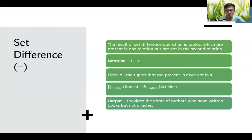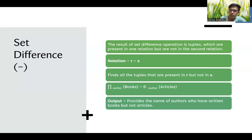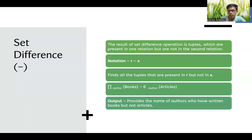The next operation is set difference, denoted by the minus (−) symbol. The result of set difference contains tuples which are present in one relation but not in the second. It finds all tuples present in r but not in s. The notation is r − s. For example, π_{author}(books) − π_{author}(articles) selects the authors who have written books but not articles.